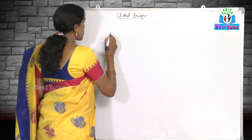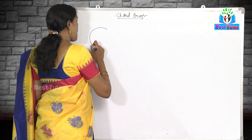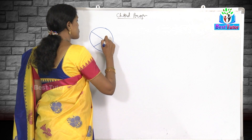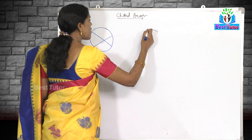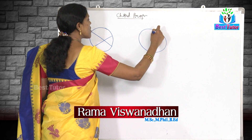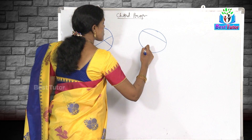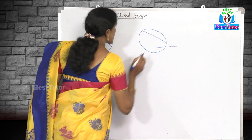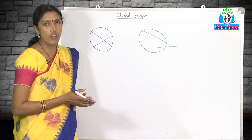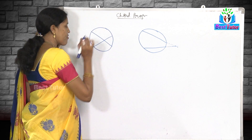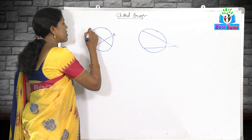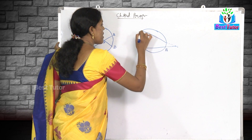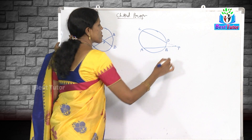The property is: if two chords intersect internally inside the circle, or if we extend them they will intersect externally outside the circle, then the product of the segments of the chords are equal. Let us understand the figure. AB and CD are two chords which are intersecting at a point P — both for the internal and external cases.